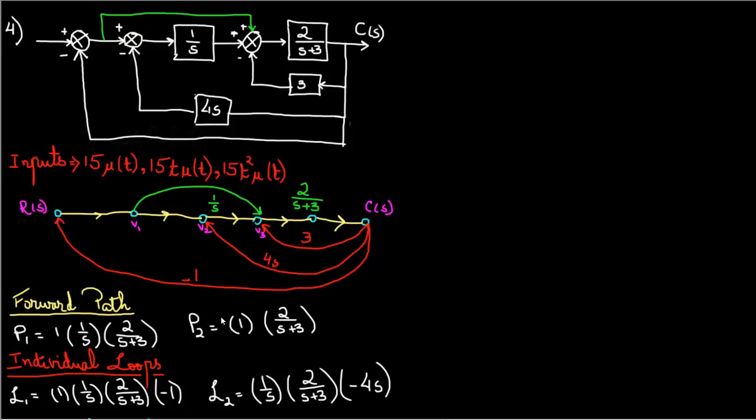To do this we are given inputs where we have step, ramp and parabola for our inputs. And to condense the system I'm going to use the flow diagram Mason's rule method to do this.